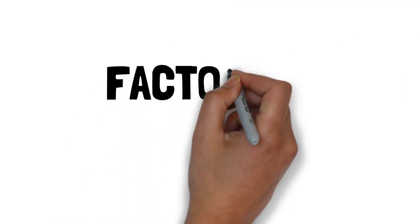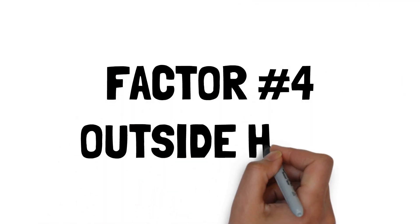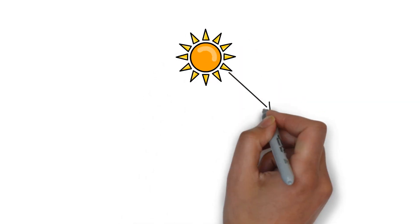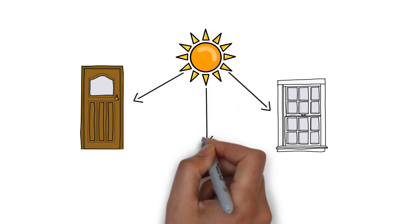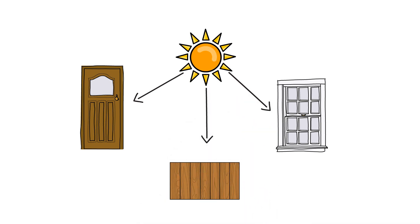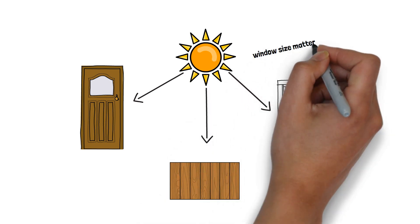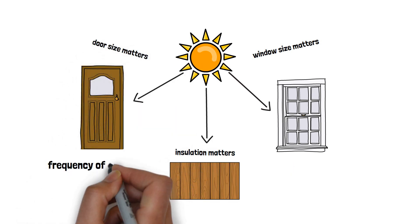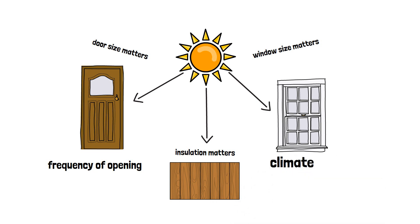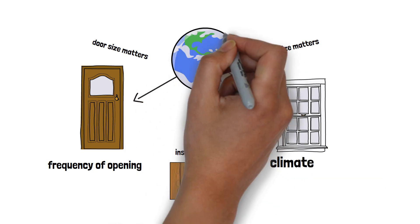Factor number four, outside heat. Another variable is outside heat. Direct sunlight coming in through windows, doors, or hot air seeping in through the walls will greatly influence your heat load. Window size matters. Door size matters. Insulation matters. The frequency in which the door is opened and shut matters. The climate of the area your boat is situated in matters.